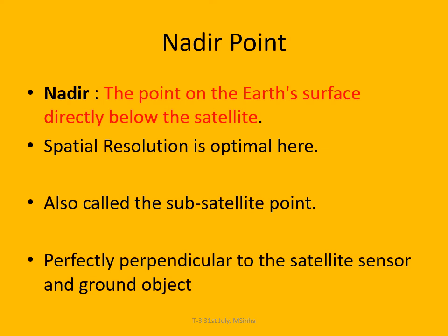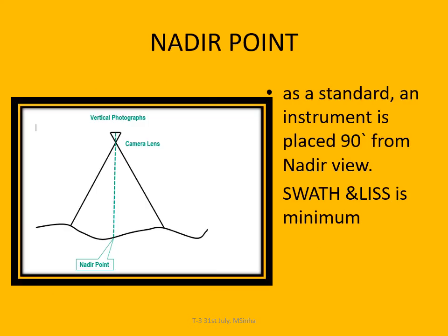The nadir point is the point on the Earth's surface directly below the satellite. Spatial resolution is optimal at the nadir point. The angle here is perfectly perpendicular — exactly 90 degrees. It is also called the sub-satellite point and is perfectly perpendicular to the satellite center and the ground object. Imagery recorded from the nadir point has no distortion in scale. At the nadir point, swath and distortion are minimum, allowing very precise information to be captured.